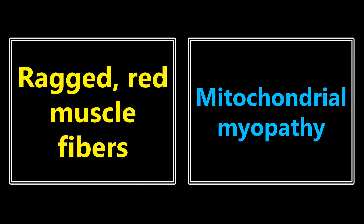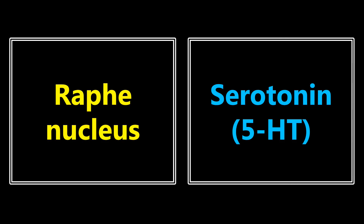Ragged red muscle fibers: this description is classic for mitochondrial myopathy. Raphe nucleus: this is one of the nuclei where you have to identify the neurotransmitter being produced, and in this case it's going to be serotonin, also known as 5-hydroxytryptamine.